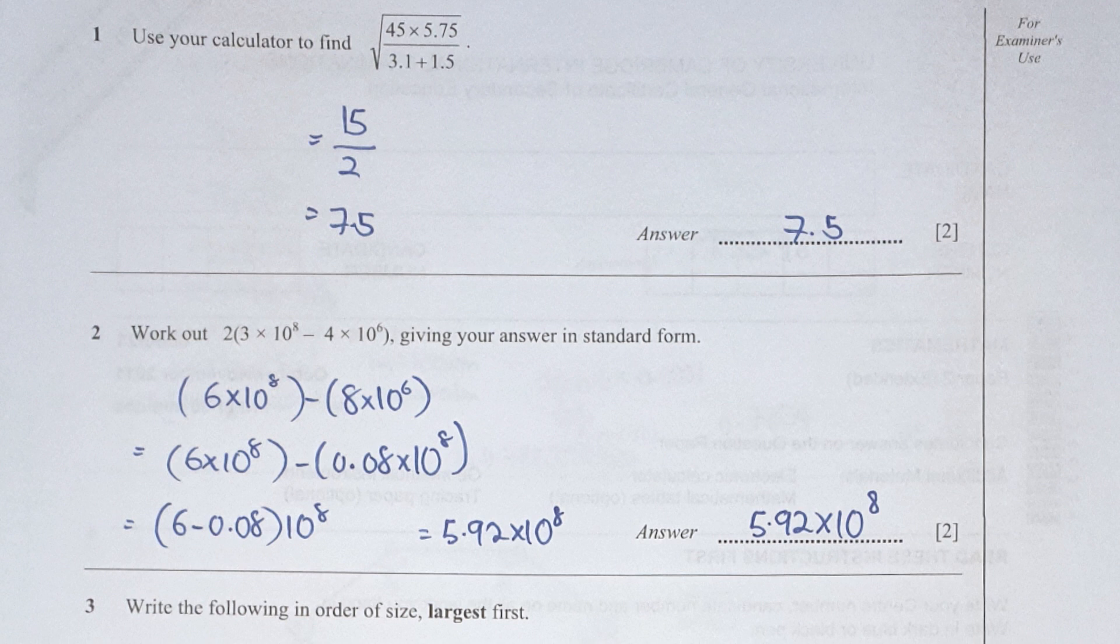To make the calculation easier, I change the power of 10 to the power of 6 into power of 8 by converting the 8 into 0.08. Then only run the calculation, so 6 minus 0.08 times 10 to the power of 8 will get you 5.92 times 10 to the power of 8.